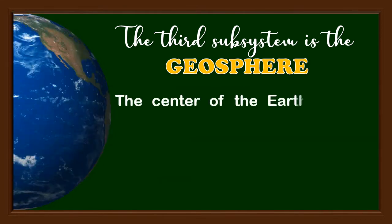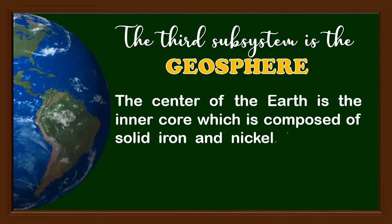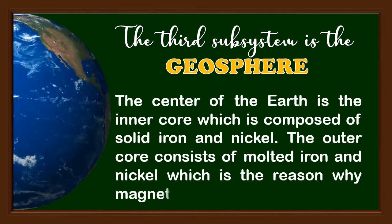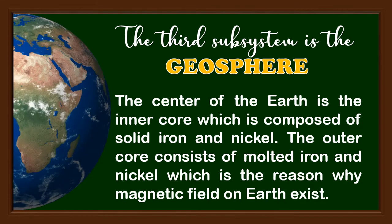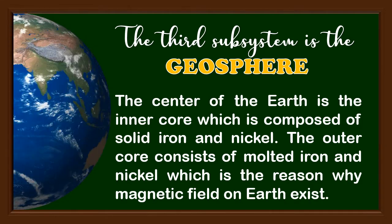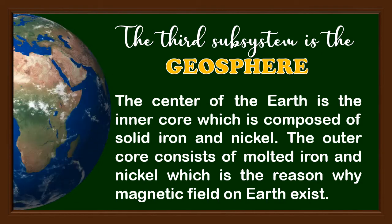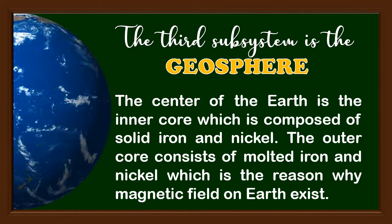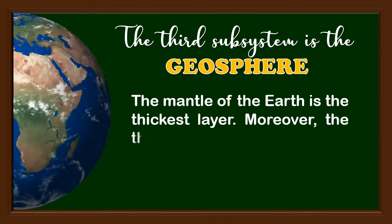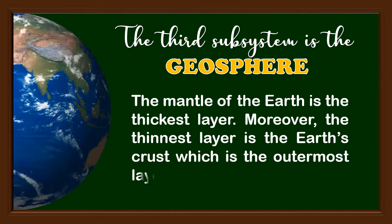The center of the Earth is the inner core, which is composed of solid iron and nickel. The outer core consists of molten iron and nickel, which is the reason why the magnetic field on Earth exists. The mantle of the Earth is the thickest layer. Moreover, the thinnest layer is the Earth's crust, which is the outermost layer of the Earth.